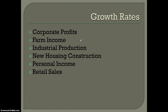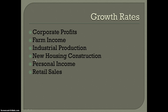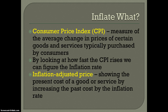Growth rates — these are the different areas: corporate profits — how much are businesses making; farm income — how much are farmers earning; industrial production — how much is the growth in production; new housing construction — how many new houses are being built; personal income — how much money are people making; retail sales — how much are people buying. These are all indicators that go into the growth rates as an economic indicator.